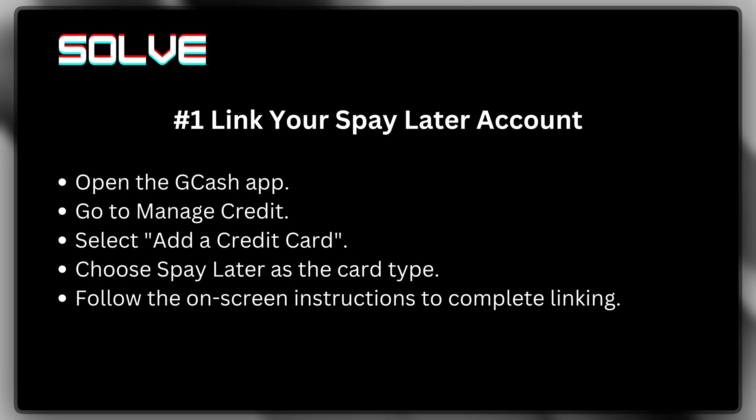First, go ahead and open the GCash app. Then you want to go to Manage Credit, and from there go to Add a Credit Card. Once you do that, you want to choose S-Pay Later as the card type, and just follow the on-screen instructions to complete the linking.